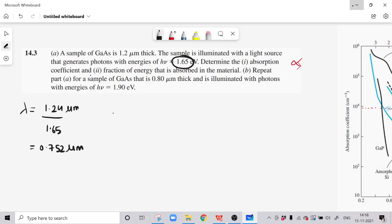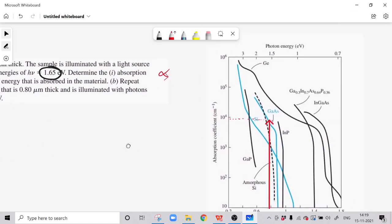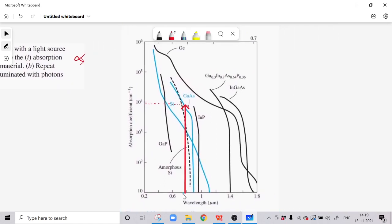Now we have to calculate the absorption coefficient. We have the graph between absorption coefficient alpha and lambda in micrometer at figure 14.4 in the textbook of Donald Neamen. At 0.752 micrometer, it is approximately 9 times 10 raised to 3 per centimeter.